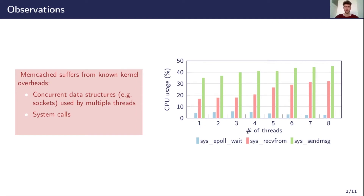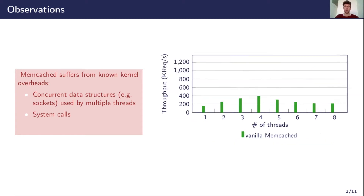However, Memcached's performance is limited by the Linux kernel because its network stack and socket API add too much overhead when receiving network packets. When Memcached receives requests over UDP, the socket can quickly become a bottleneck as the same data structure is shared between the Memcached threads and the kernel threads running in the network stack. When we measure the throughput of requests processed by Memcached, we realize that the UDP socket bottleneck has a negative impact on performance.